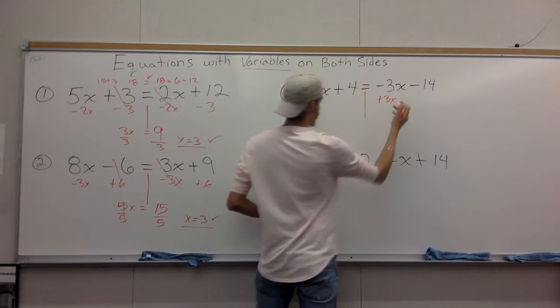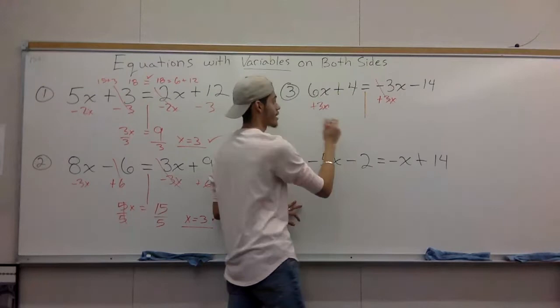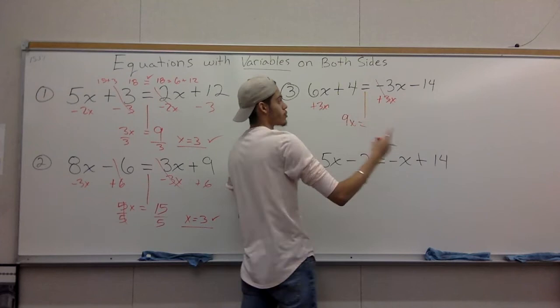We have this negative 3x here, do the opposite. If it's negative, we're going to add. So you add 3x to one side, what you do one side you do the other, add 3x to the other side as well. So 6x plus 3x equals 9x.